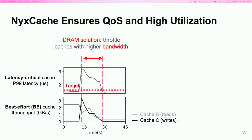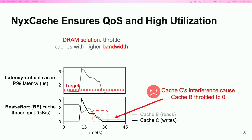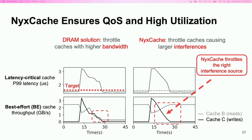Following the violation, the DRAM-based solution will iteratively throttle the best-effort caches with higher bandwidth. As shown, the latency-critical cache is then protected. However, the problem is that the innocent cache B is incorrectly penalized. Although the latency-critical cache's performance drop is caused by bursty writes in cache C, cache B ends up with around zero throughput. In contrast, NixCache can find out that cache C is the real interference source through micro-experimenting, and only cache C is throttled. With NixCache, cache B performance and system utilization are increased by more than six times, showing the benefits of NixCache's interference analysis mechanism.